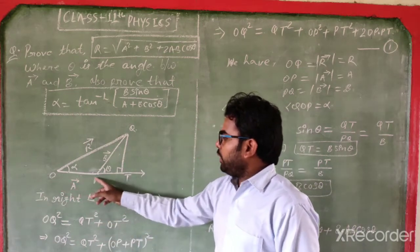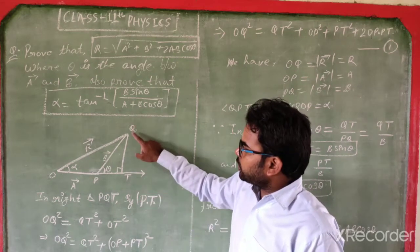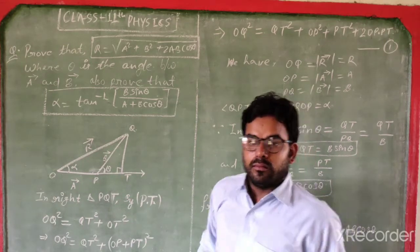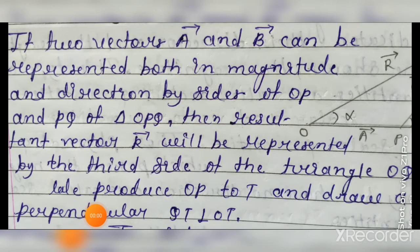We produce OP to T and draw QT perpendicular to OT. If two vectors, vector A and vector B, can be represented both in magnitude and direction by sides OP and PQ of triangle OPQ, then the resultant vector R will be represented by the third side OQ. We produce OP to T and draw a perpendicular QT, so QT is perpendicular to OT.